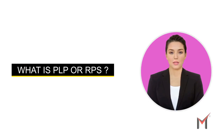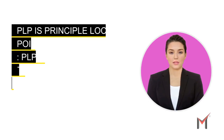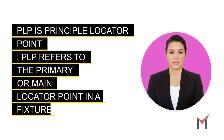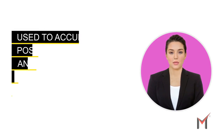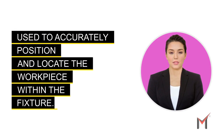What is PLP or RPS? PLP is Principal Locator Point. PLP refers to the primary or main locator point in a fixture. It is a specific point or feature on the workpiece that is used to accurately position and locate the workpiece within the fixture.